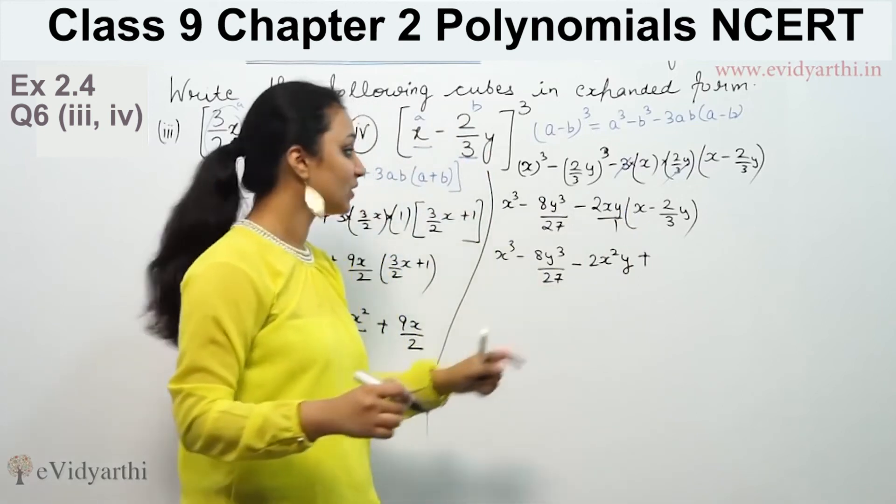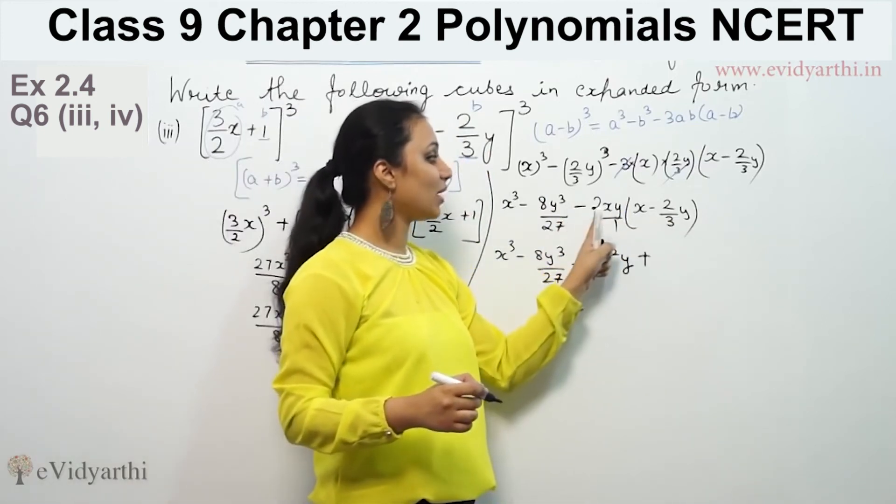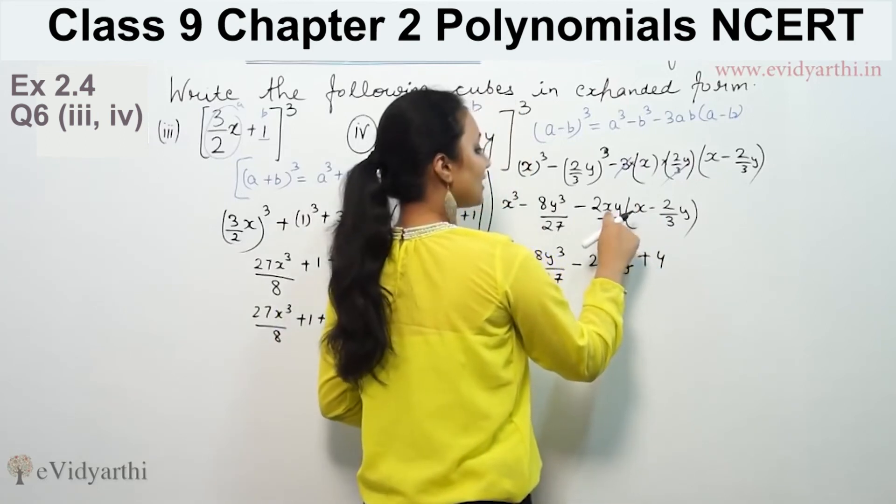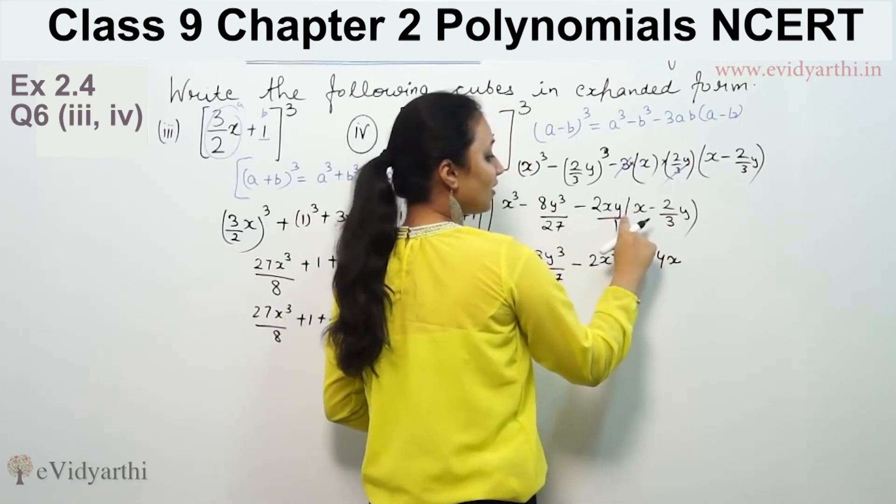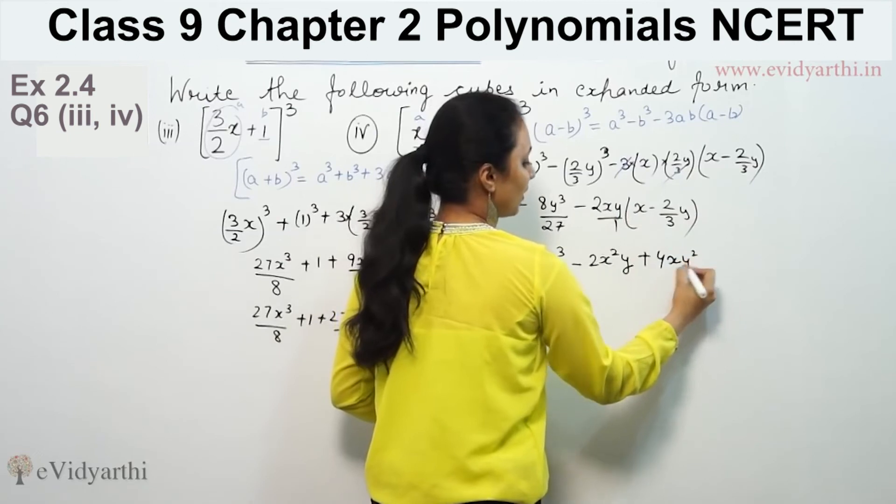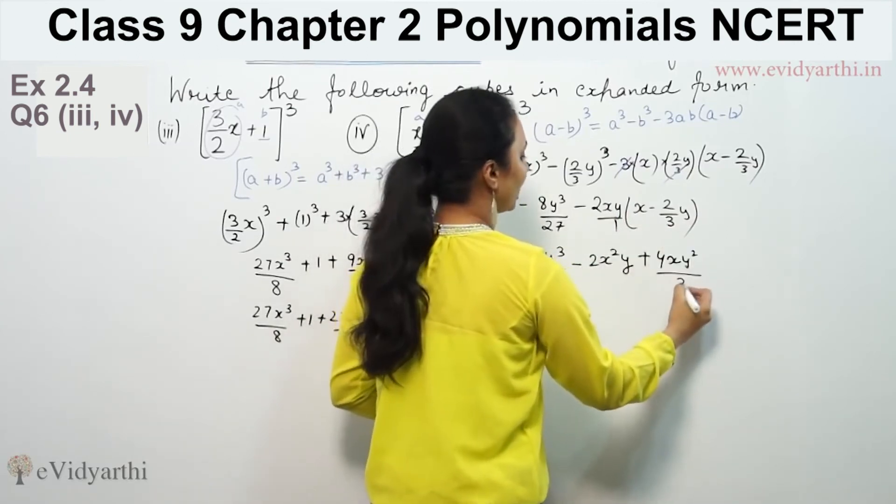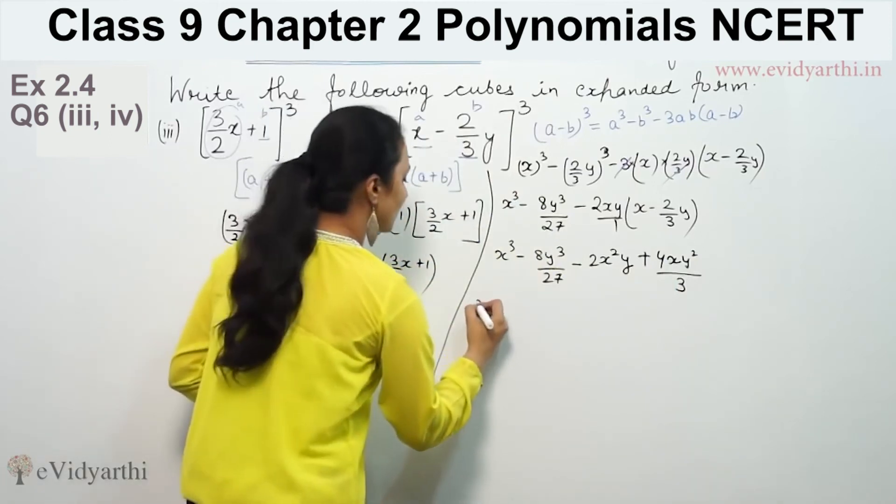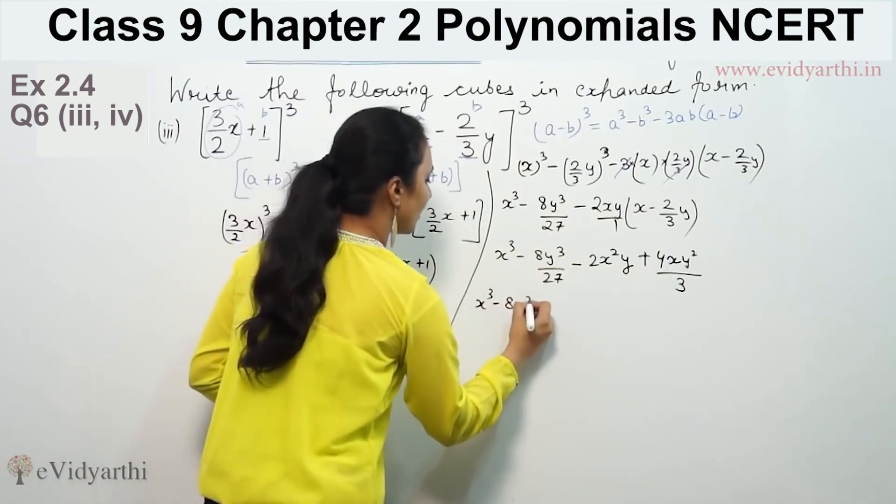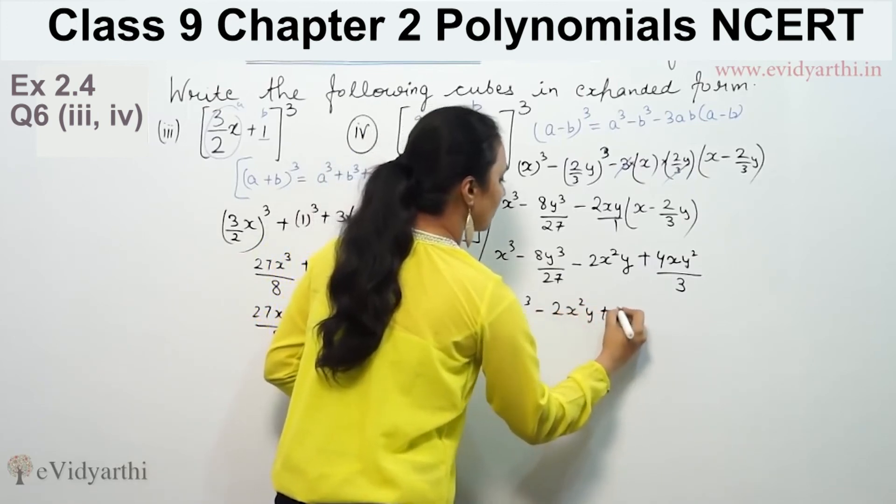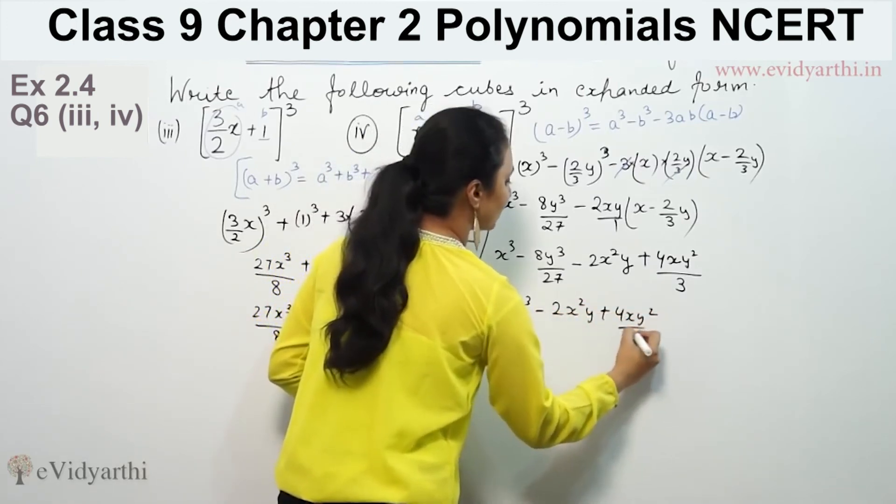Numerator and numerator are multiplied, so 2 × 2 is 4, y times y is y². So the final answer is x³ - 8y³/27 - 2x²y + 4xy²/3.